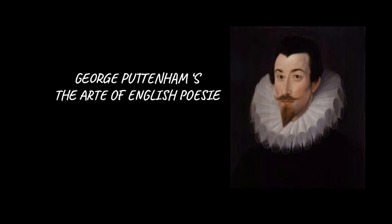The second book discusses Prosody and contains an account of the five types of English word structures: the staff, the measure, concord or symphony, situation, and figure. The third book discusses figures of speech.